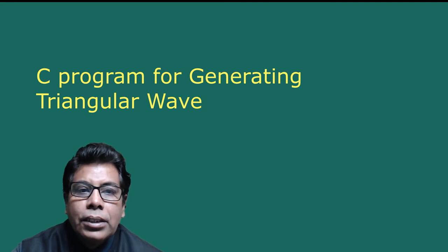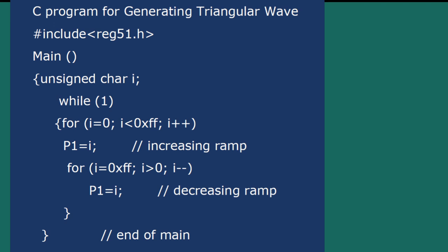Let us go to the C program for generating triangular wave. The #include reg51.h remains the same. In main, we declare unsigned char i. The logic uses two for loops. The first for loop — for(i = 0; i < 0xFF; i++) — handles the increasing ramp, and we assign P1 = i. The second for loop — for(i = 0xFF; i > 0; i--) — handles the decreasing ramp, and again we assign P1 = i. In this way the two for loops generate the triangular waveform.